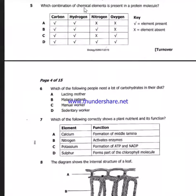Question 5: Which combination of chemical elements is present in a protein molecule? Now in a protein, we've got sulfur, carbon, hydrogen, nitrogen and oxygen. And the answer is D, where all of them are ticked.